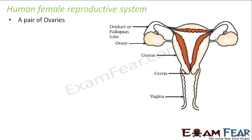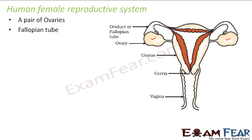The female reproductive system consists of mainly a pair of ovaries. Ovaries are the most important part of the female reproductive system. Here you can see these are the two ovaries, one and two. Ovaries are the places where the eggs are produced. Eggs are the female germ cells, also known as ovum or ova. Then there is a fallopian tube, which starts from the ovary and connects to the uterus.